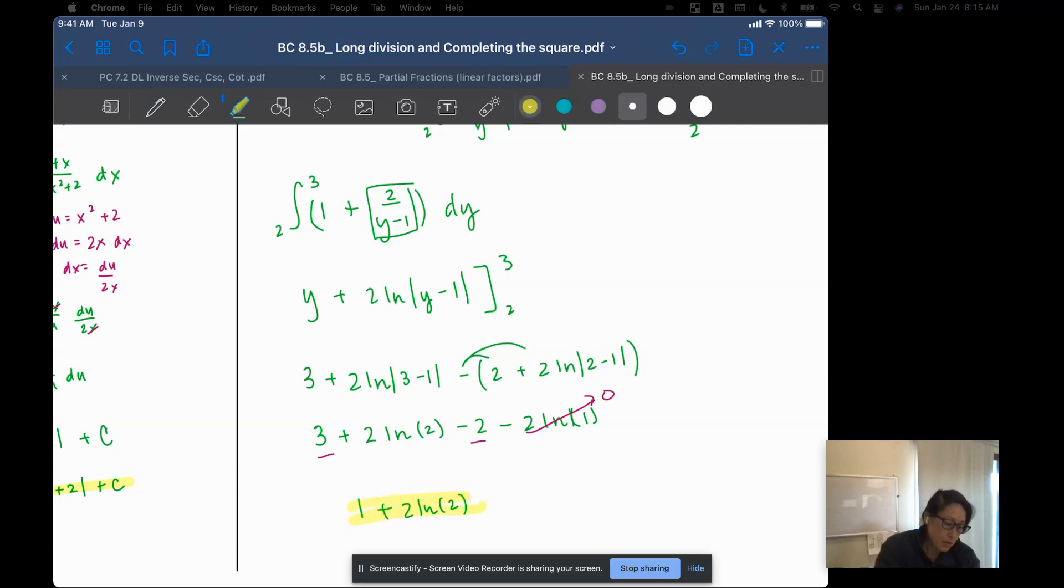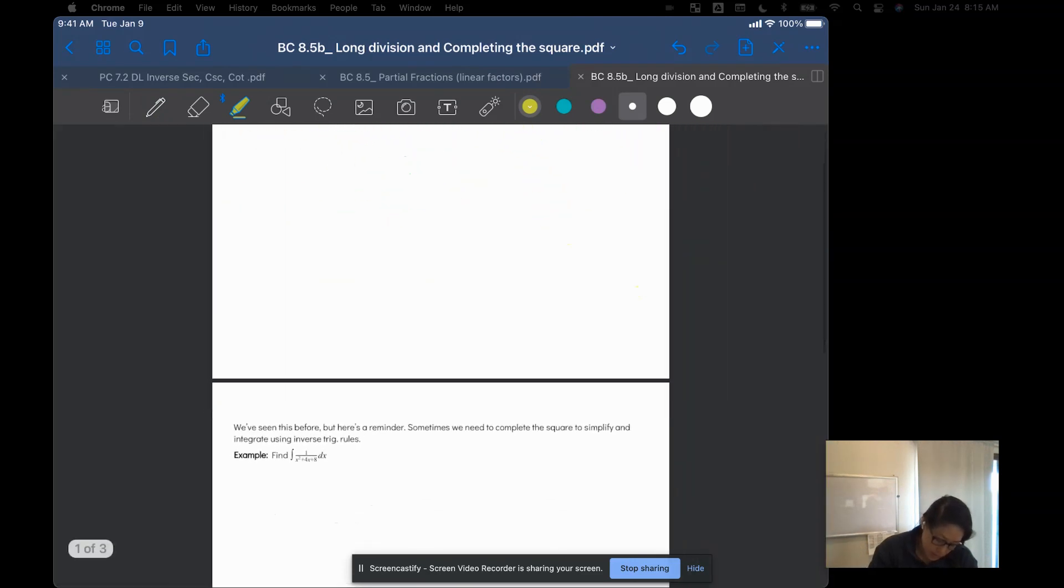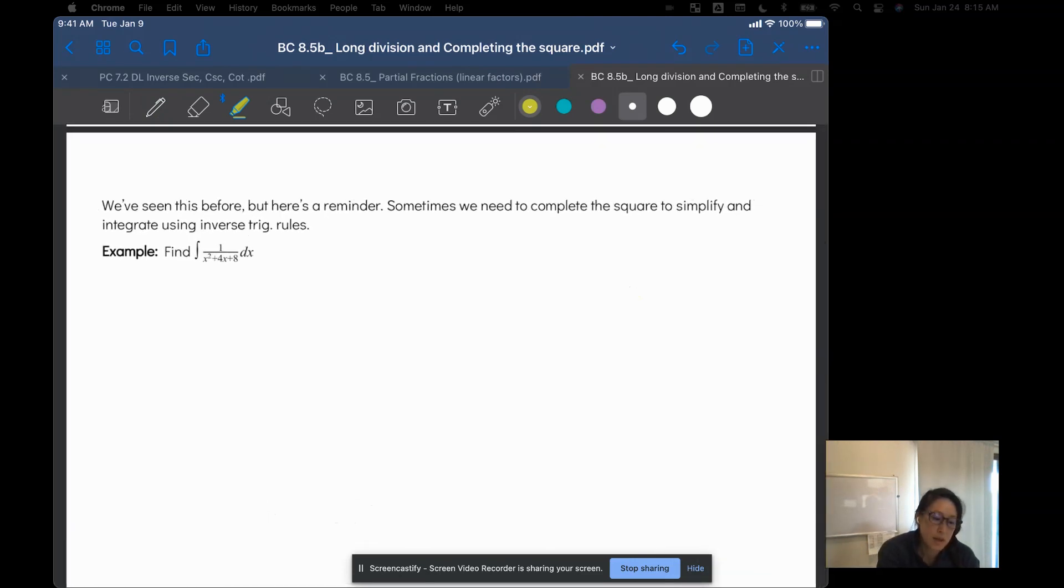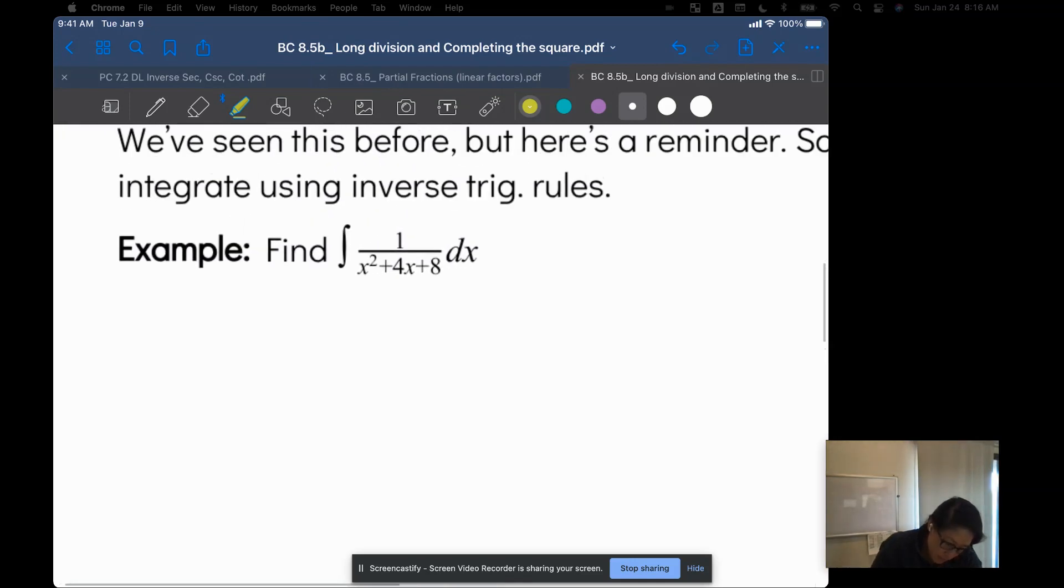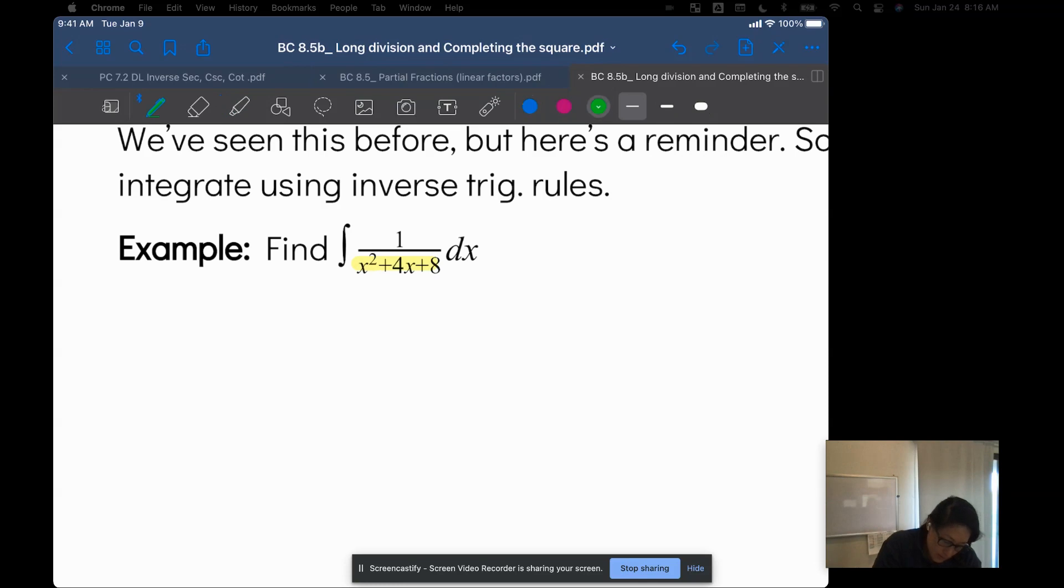Okay, last one. Just a reminder that sometimes we need to complete the square to make our integral more manageable. So what we're going to do is take the denominator here. And I'm going to say x squared plus 4x plus something, and then I move the 8 to the outside. So I'm going to take my b value, divide it by 2, and then square that value, which would be 4 over 2 squared, which is 4. So I'm adding in 4 inside the parentheses. So in an expression, we need to subtract 4 on the outside.